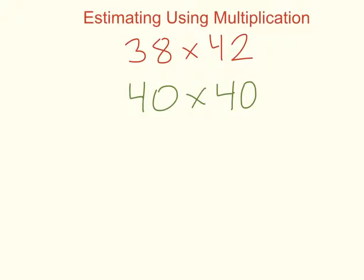Now if you remember our strategy for multiplying with zeros, we cross out the zeros and I have 4 times 4 is 16, and I tack on two zeros because that's what I crossed out. So my answer is 1,600.